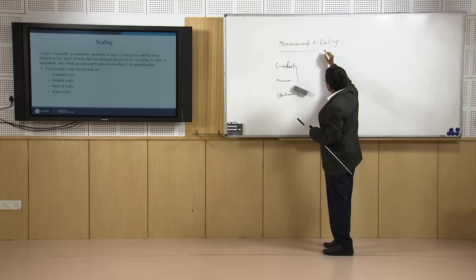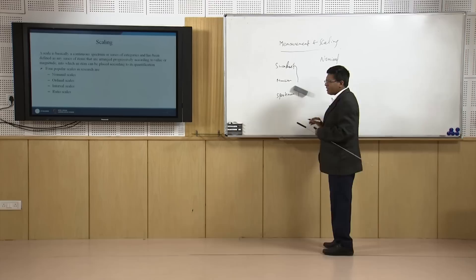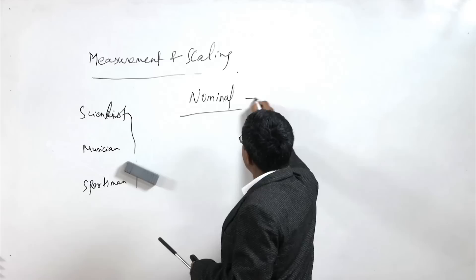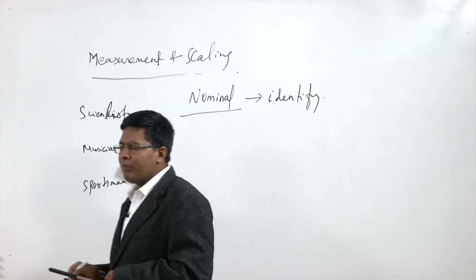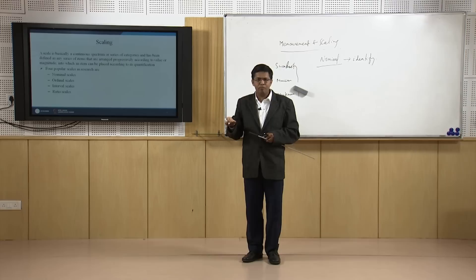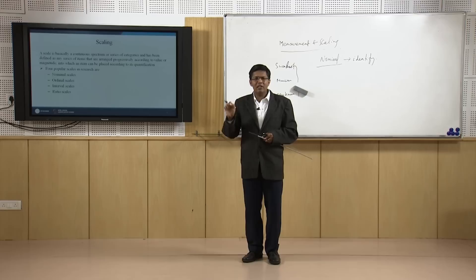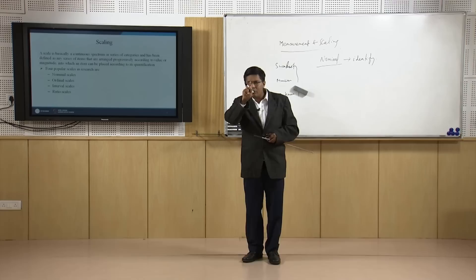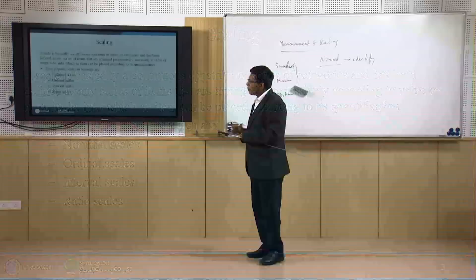The first is the nominal scale — the most basic, elementary scale. Nominal scale is something which is just to identify. For example, jersey numbers of players: Messi has jersey number 5, it does not mean he is the fifth player. Ronaldo has jersey number 7 — it is just to identify that if it is 7 it must be Ronaldo. So nominal scales are basically to identify.